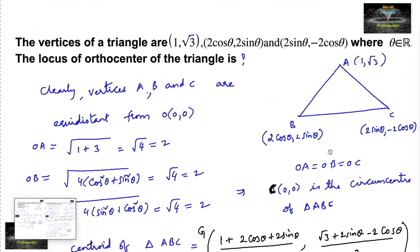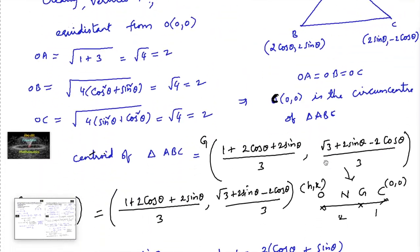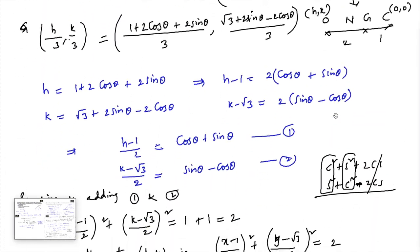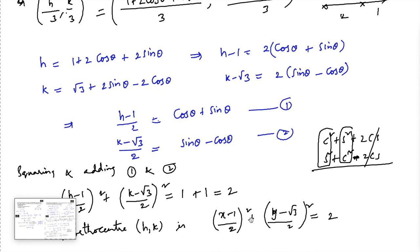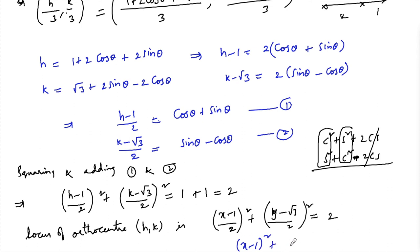So this is the answer. We can also write it as (x minus 1) squared plus (y minus root 3) squared equals 4, which is a circle with center (1, root 3) and radius 2.